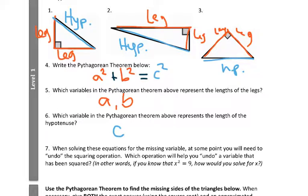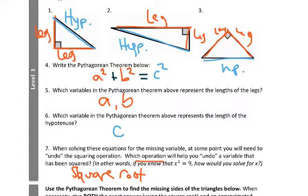When solving these equations, look for the missing side. At some point you will need to undo the squaring operation. This is a lot like question four in your last homework assignment. If you know that the area of a square is nine, we want to know what the length of the sides were that made that. The operation that we use to undo squaring is called a square root. We talked a lot about the box of doom in first trimester, where we wrote what was happening to x. Now we're saying x is being squared, and the opposite operation for that is the square root.